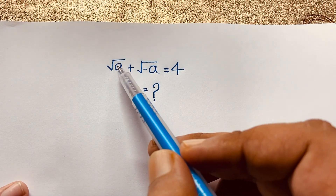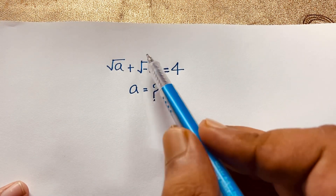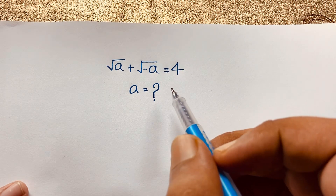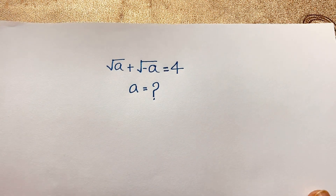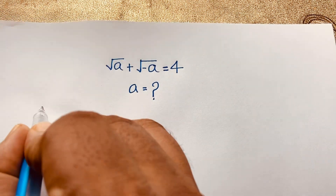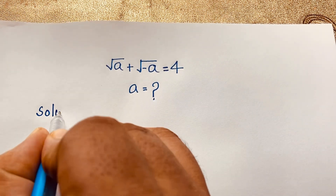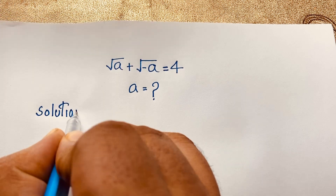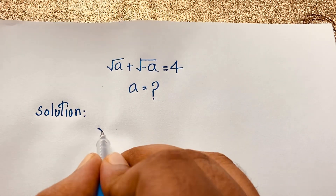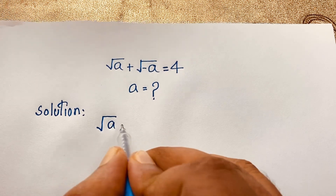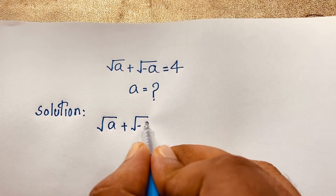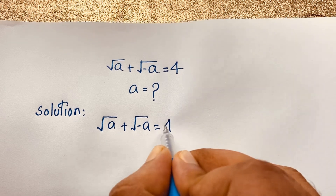This is square root A, but this is square root negative A — this is a complex number — and it is equal to 4. A is equal to what? So I solved this question using an easy method. Our question is: square root A plus square root minus A is equal to 4. This is our question.